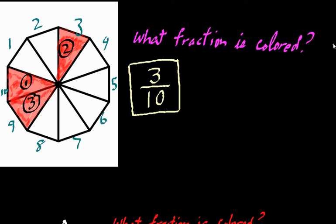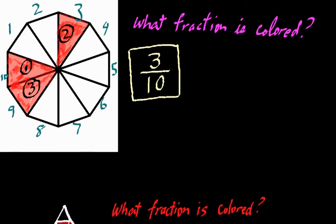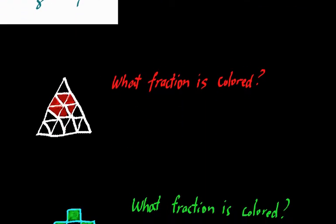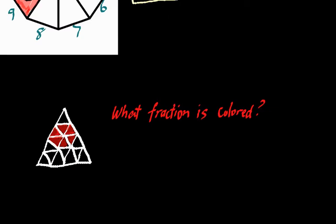Let me move on to another question. What portion of this triangle here is actually colored? This is a big triangle, and it's divided up into a bunch of smaller triangles. Let's count out how many small triangles there are.